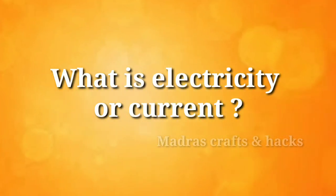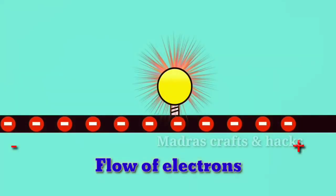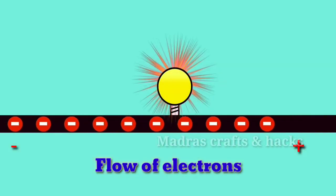What is electricity or current? Flow of electrons through a conductor is called electrical current.